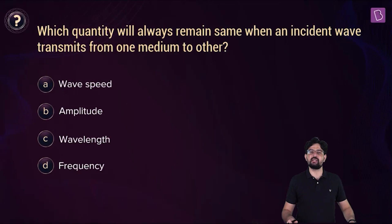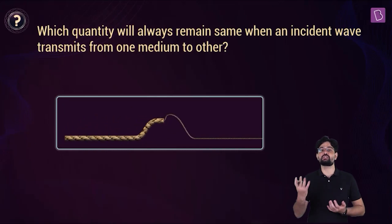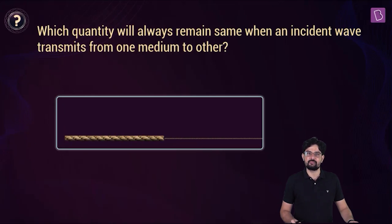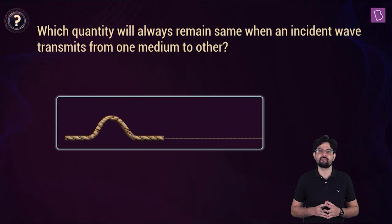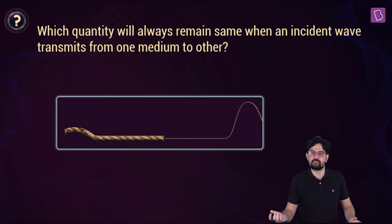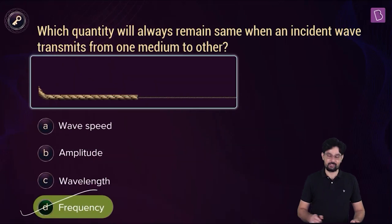So you have to tell which quantity remains unchanged as the wave changes its medium. And I know you are smiling because you know that the answer to this simple problem is frequency. So the frequency depends upon how the source is creating the disturbance. And it might happen that the disturbance is produced in air, but the wave is traveling in water also. Think about sound wave. So the wave can travel in any medium, but that doesn't change how the source is producing the waves. And that is why, in this simple case, you can tick option D as the right option.